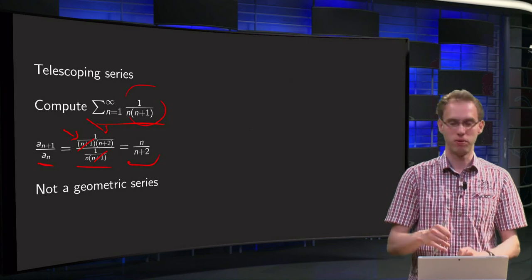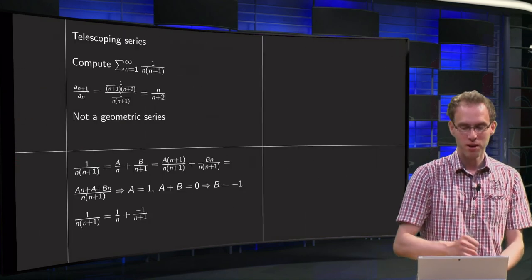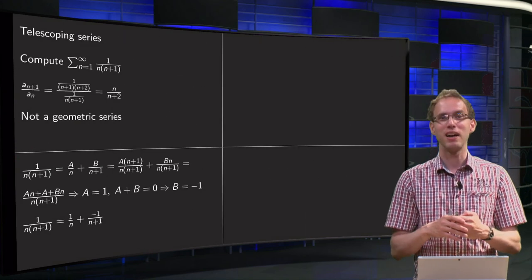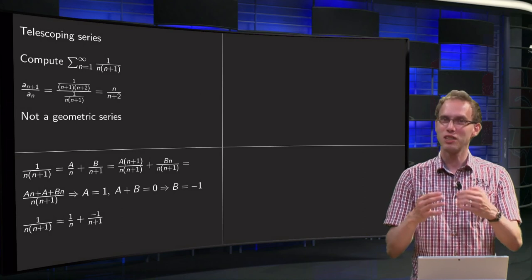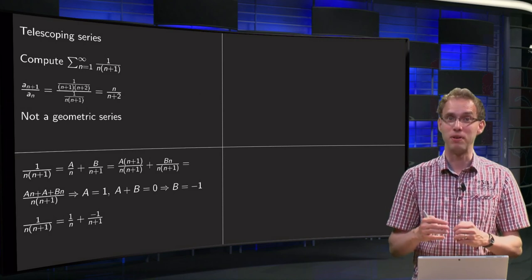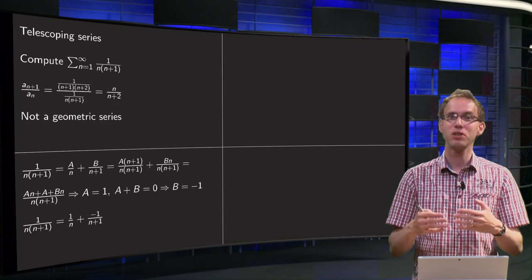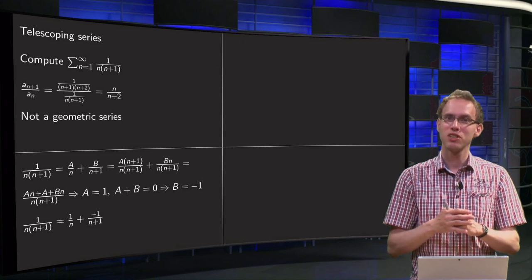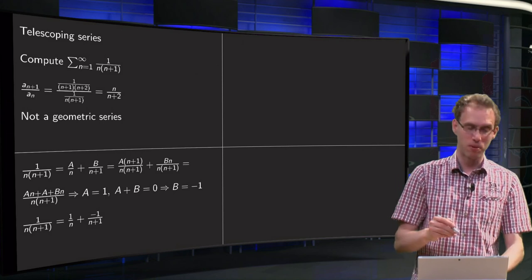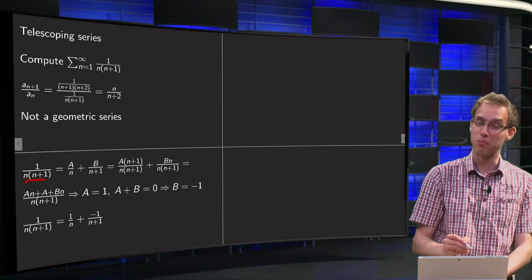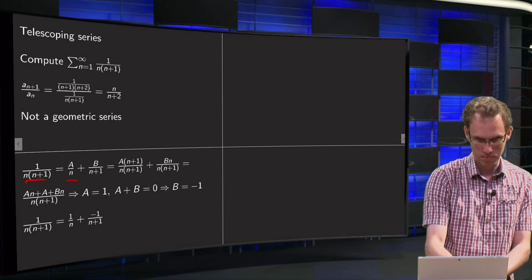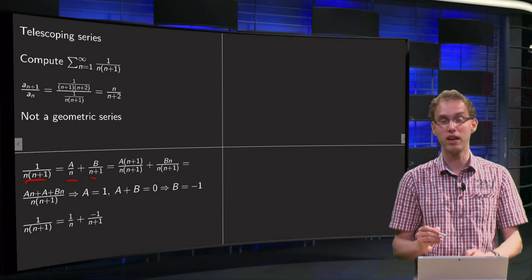Oh, but what now? We can try to separate this fraction, because then we will see that something nice will happen. You cannot see that beforehand of course, but let's just try and see what happens. So we separate a fraction, 1 over n times n plus 1, into a over n plus b over n plus 1. We don't know a and b.